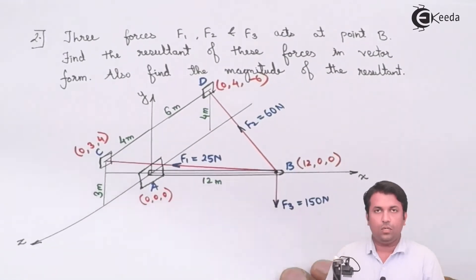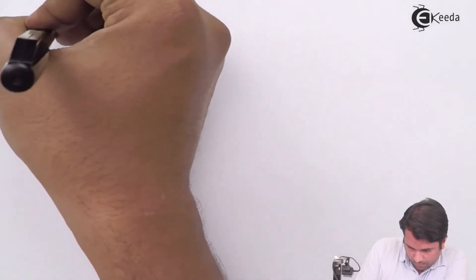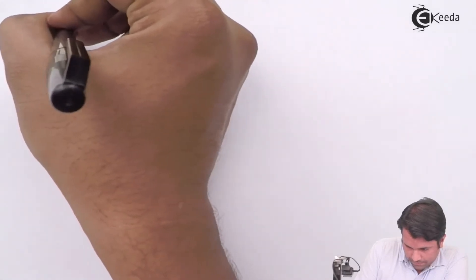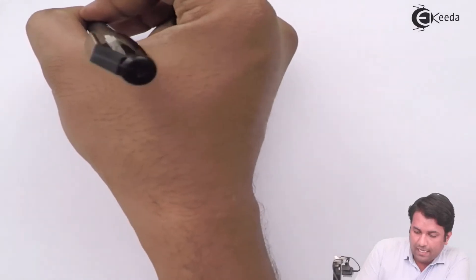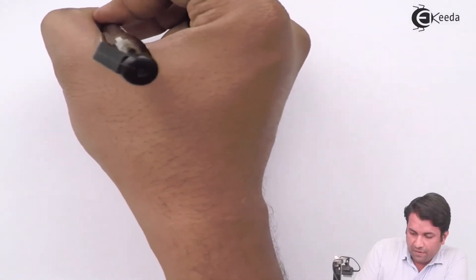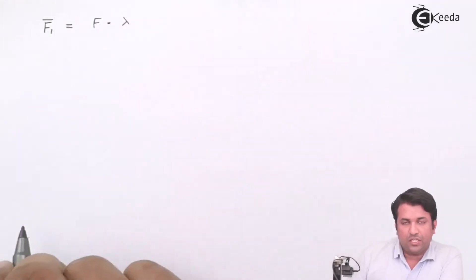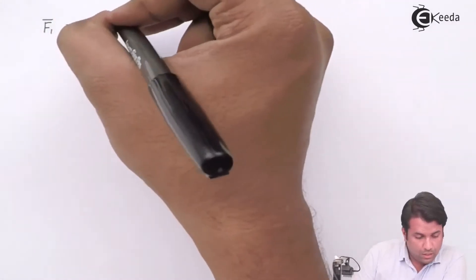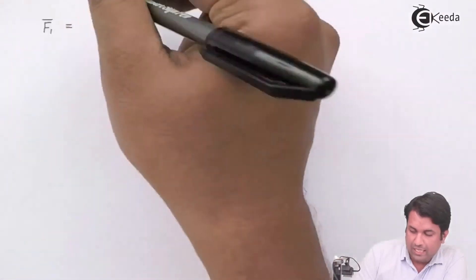Force vector F1: I know the magnitude, so all I need to do is find the unit vector from B to C. I've got the force vector F1.